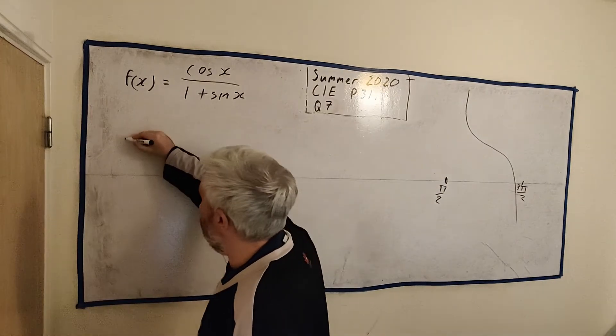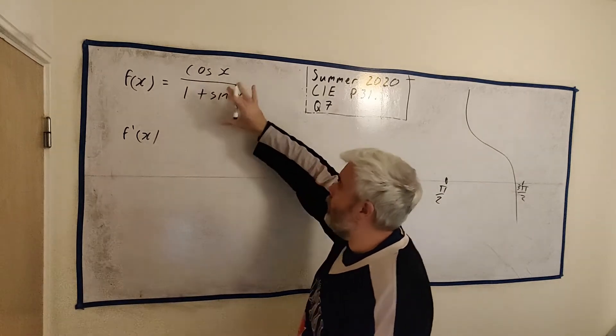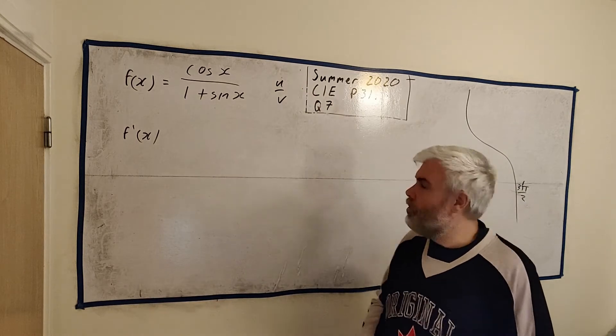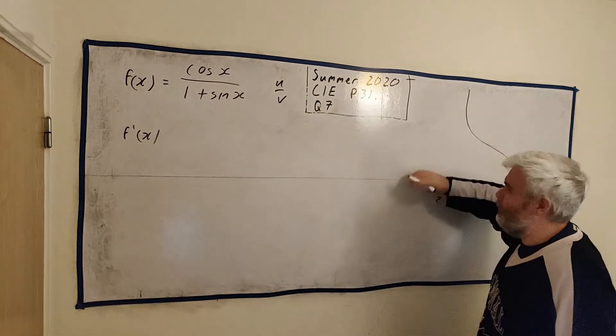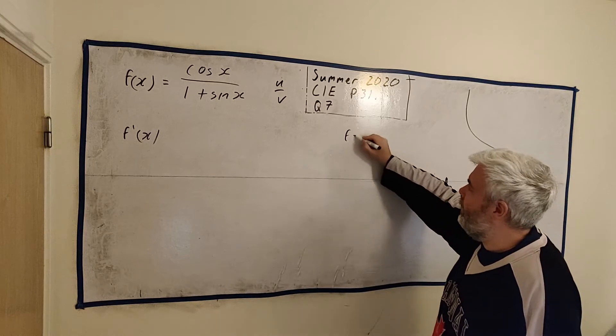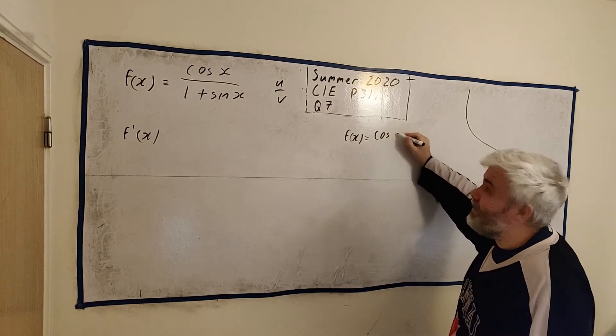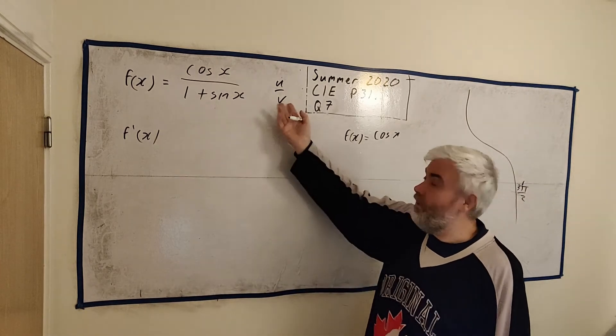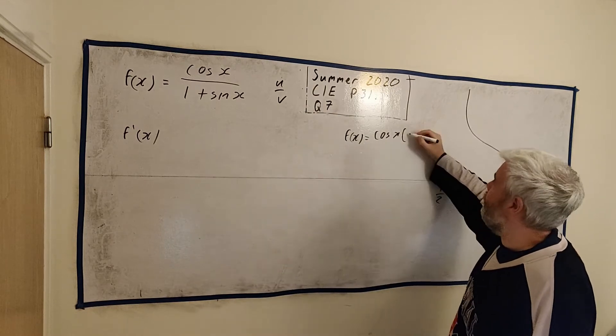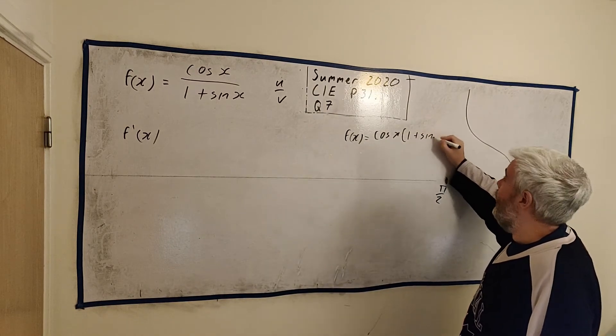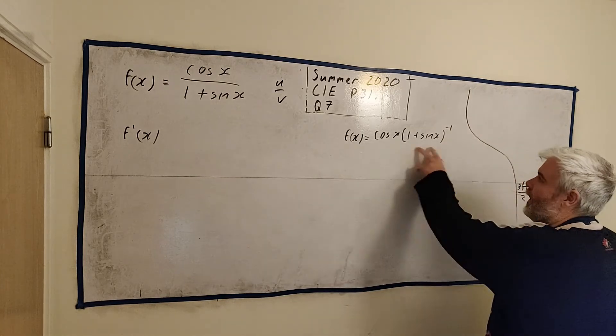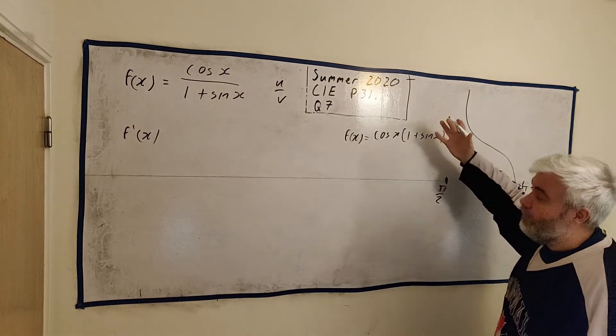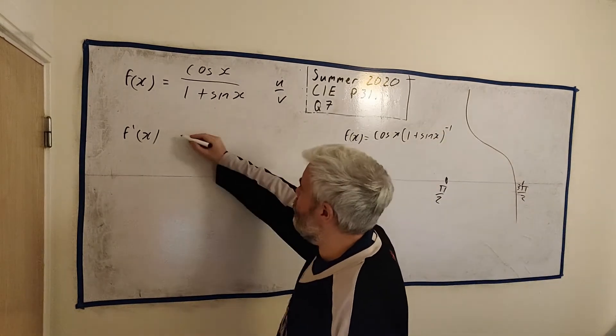We have a quotient here, u divided by v. So we can go ahead and use the quotient rule. You can also use the product rule. f(x), I'm not going to do it this way, but actually, this is the way I usually do it. But I tend to teach with the quotient rule, because students, I find, rather the quotient rule. Turn this bottom row into a multiply like this. But we'll go ahead and use the quotient rule.